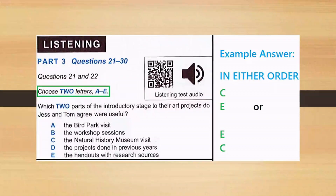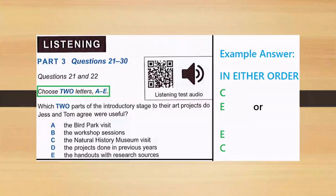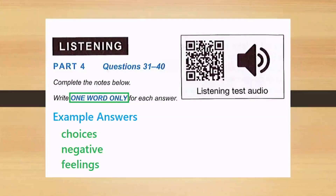In listening part three, you may have the question type: choose two letters A to E. The example answer could be in either order — for example, if the correct choices are C and E, you can write C and E or E and C. In part four, from questions 31 to 40, you may have instructions like: write one word only for each answer. The example answer is 'choices,' 'negative,' or 'feelings.'